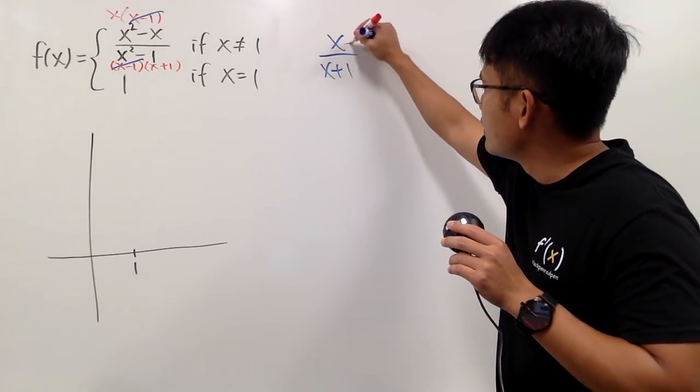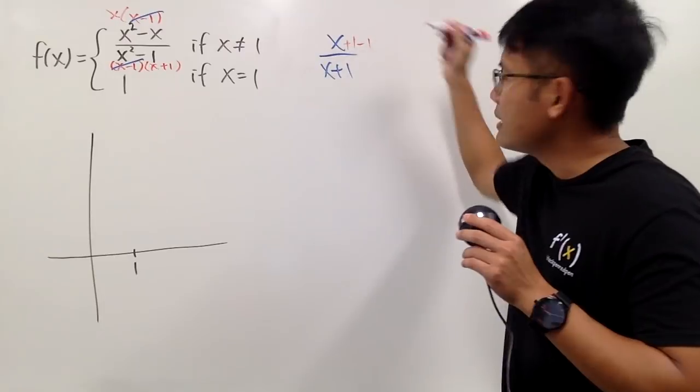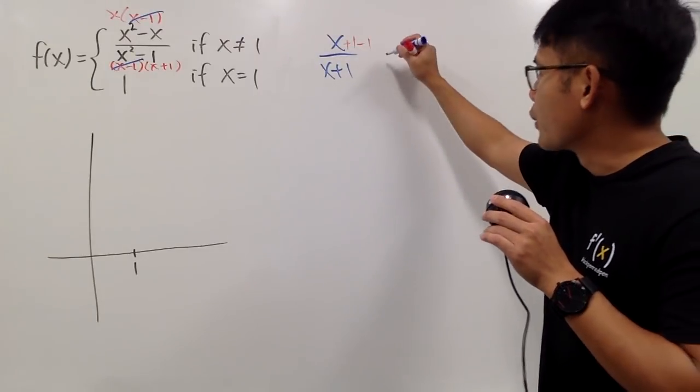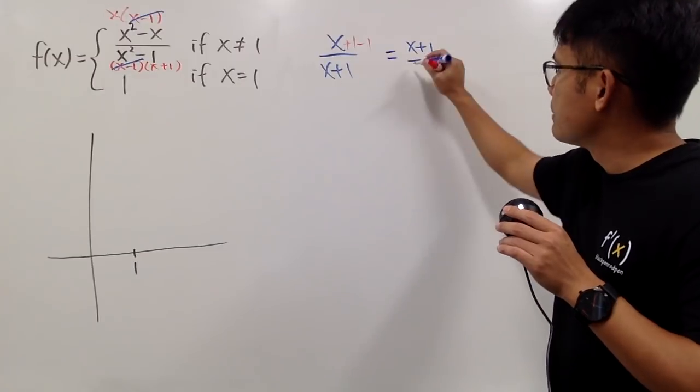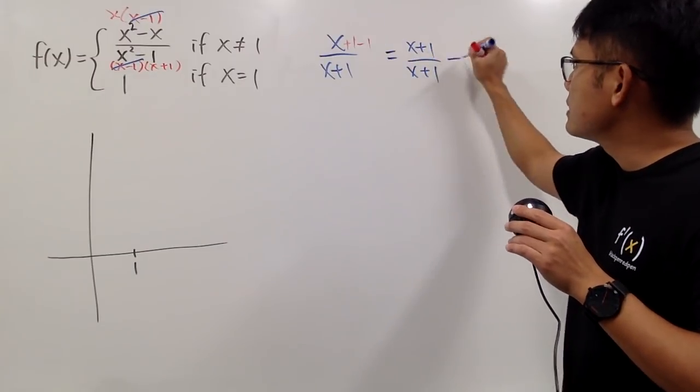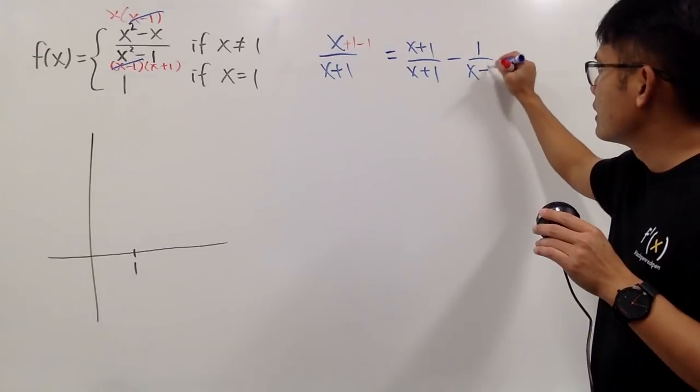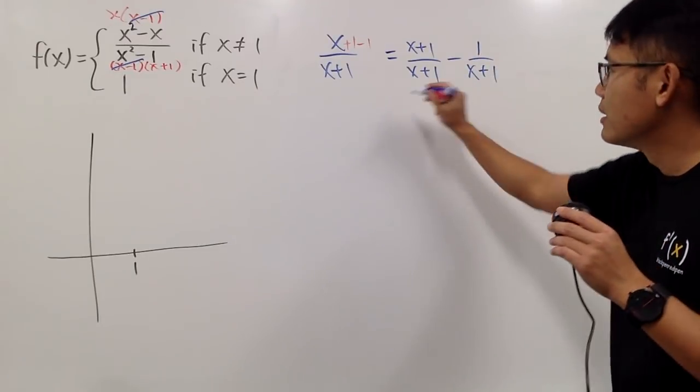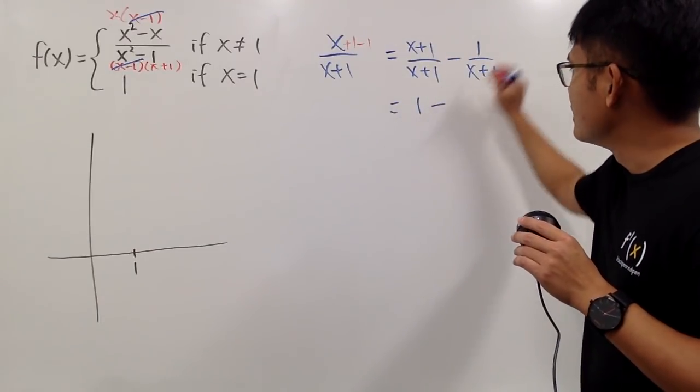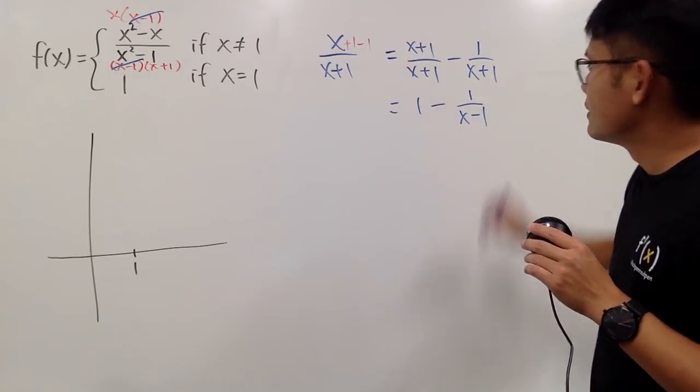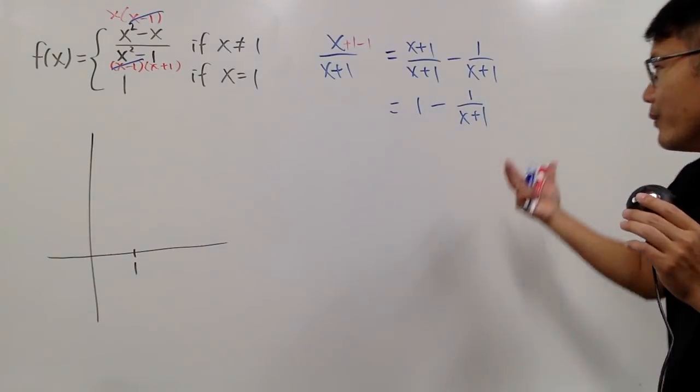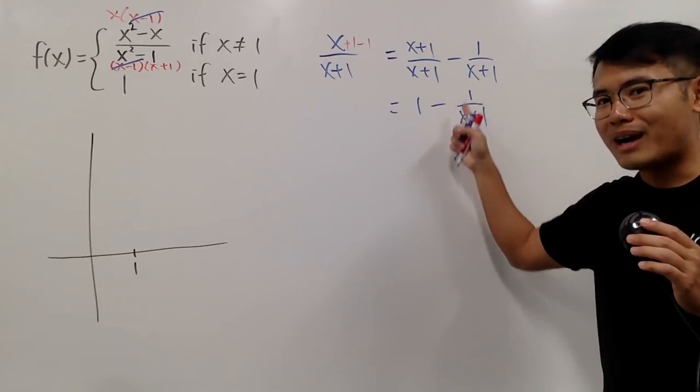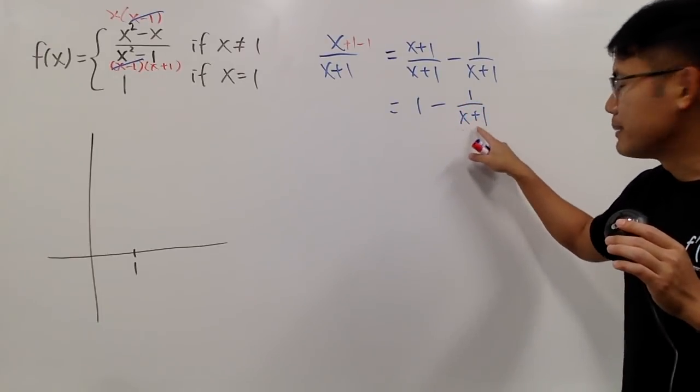But the easiest way is that you can see, if I add 1 and then minus 1, this is just a quick way to see this is x plus 1 over x plus 1, and then minus this 1 over x plus 1. In other words, this is just 1 minus that, right? This right here should be x plus 1.